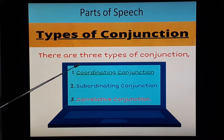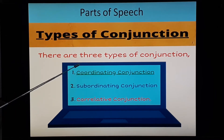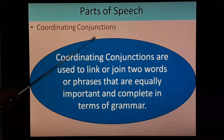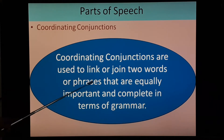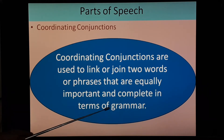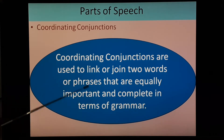Types of conjunctions — there are three types and we are doing the first one: coordinating conjunction. Coordinating conjunctions are used to link or join two words or phrases that are equally important and complete in terms of grammar. The role of a conjunction in a sentence is to join two words, two phrases, or two sentences together — the same way glue joins two parts together.